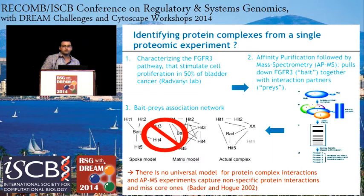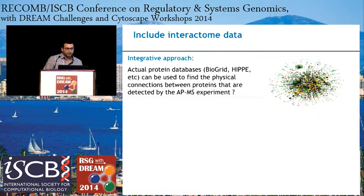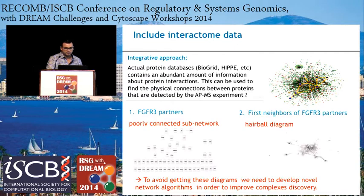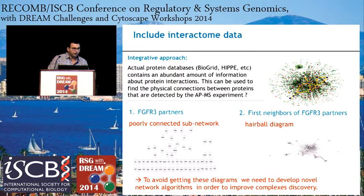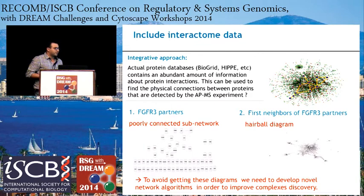Our goal, therefore, is to predict the topology of the protein complex. To accomplish this, we thought to include protein interaction networks from databases like BioGRID. However, when we connected FGFR3 with the protein interaction network from BioGRID, we found a poorly connected subnetwork. On the other hand, adding just the first neighbors of FGFR3 partners produces a hairball diagram. To avoid this, we needed to develop a novel graph algorithm.